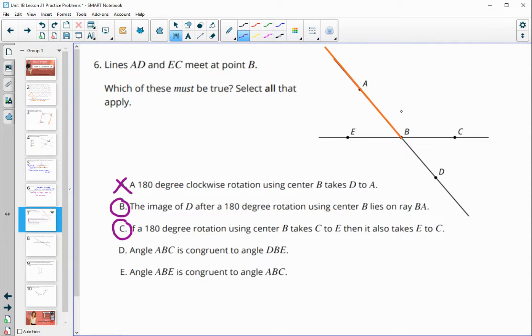Angle ABC, so angle ABC, this angle here is congruent to angle DBE. So is this angle congruent to this angle? Those are vertical angles, so that is for sure.